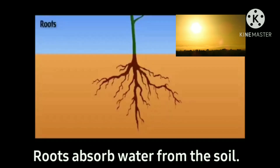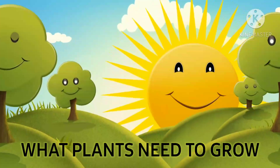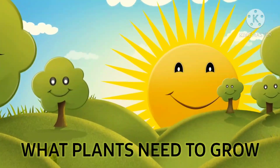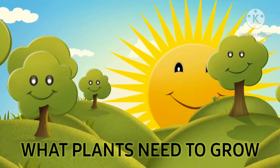Stem supports the plant and carries food to each part of the plant. Roots absorb water from the soil. Now let's see what plants need to grow.